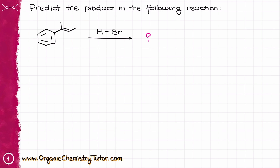Our first question is to predict the product in this reaction. We know how reactions like this begin — we're going to start with the electrophilic attack on our alkene. I'll show my curved arrows where the hydrogen from the HBr attacks the double bond, and we're going to end up with the corresponding carbocation.